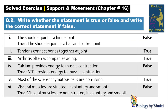True/False, number three: arthritis often accompanies aging — this is true. Number four: calcium provides energy to muscle contraction — this is false. Energy is provided by ATP, so the correct statement is: ATP provides energy to muscle contraction.